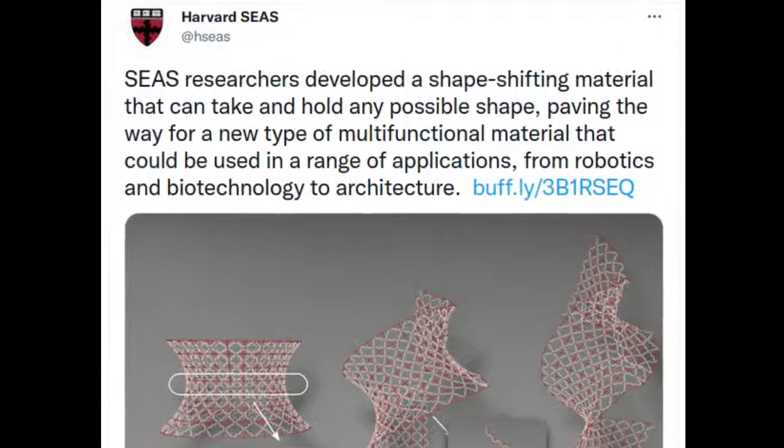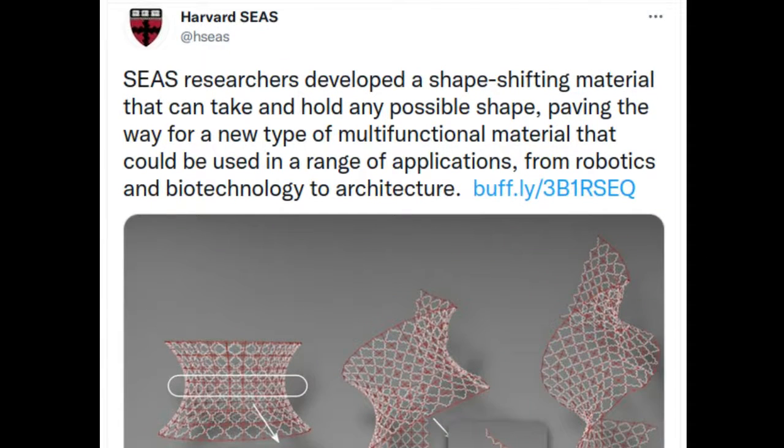Researchers from the Harvard John A. Paulson School of Engineering and Applied Sciences have developed a shapeshifting material that can take and hold any possible shape, paving the way for a new type of multifunctional material that could be used in a range of applications, from robotics and biotechnology to architecture.